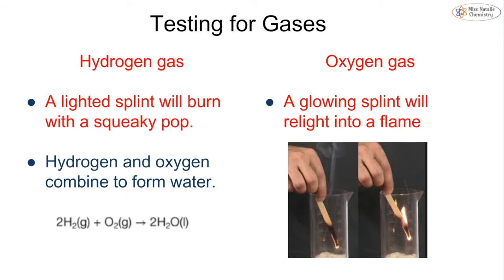To test for hydrogen gas, take a wooden splint and light it on fire, then place it into the gas. If it is hydrogen you will hear a squeaky pop sound. What's happening is the hydrogen and oxygen are combining to form water, but because it is at such a high temperature the water is in the form of a vapour, so we listen for the pop.